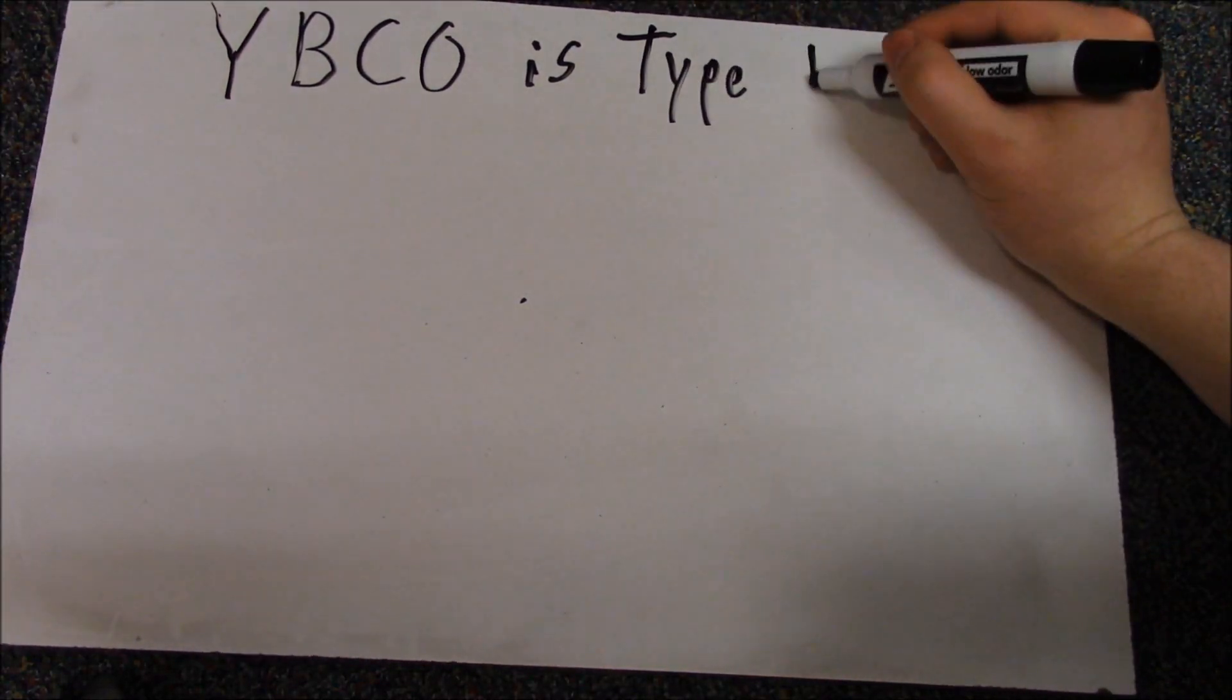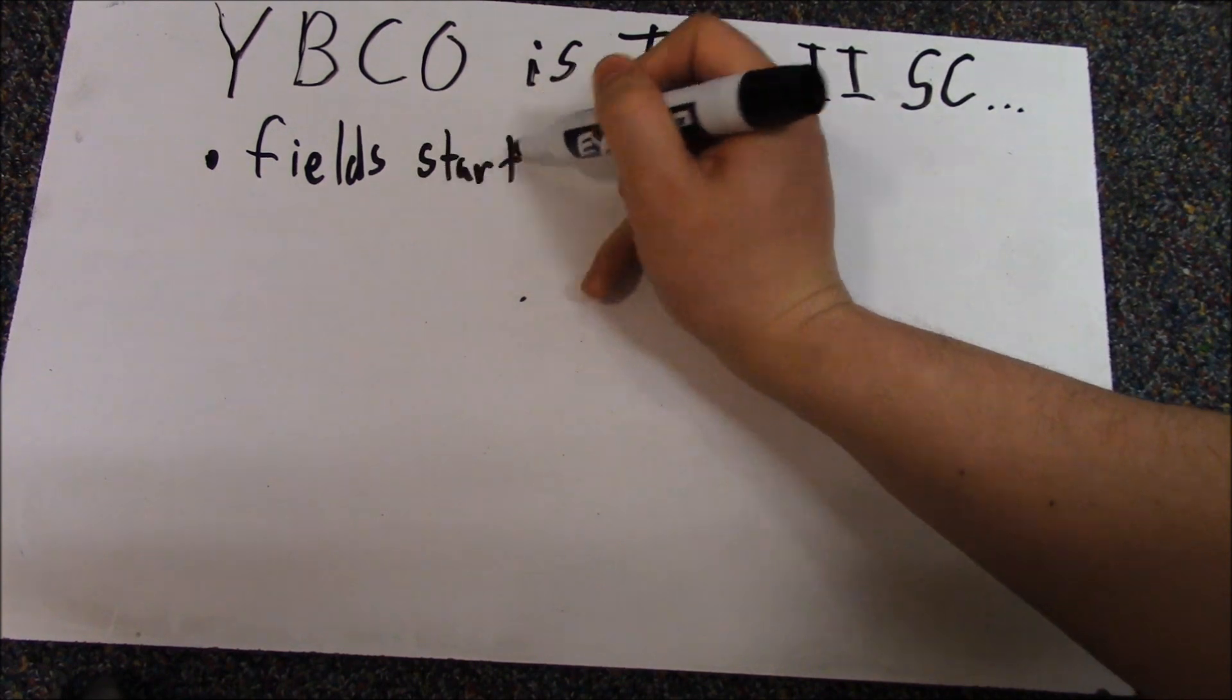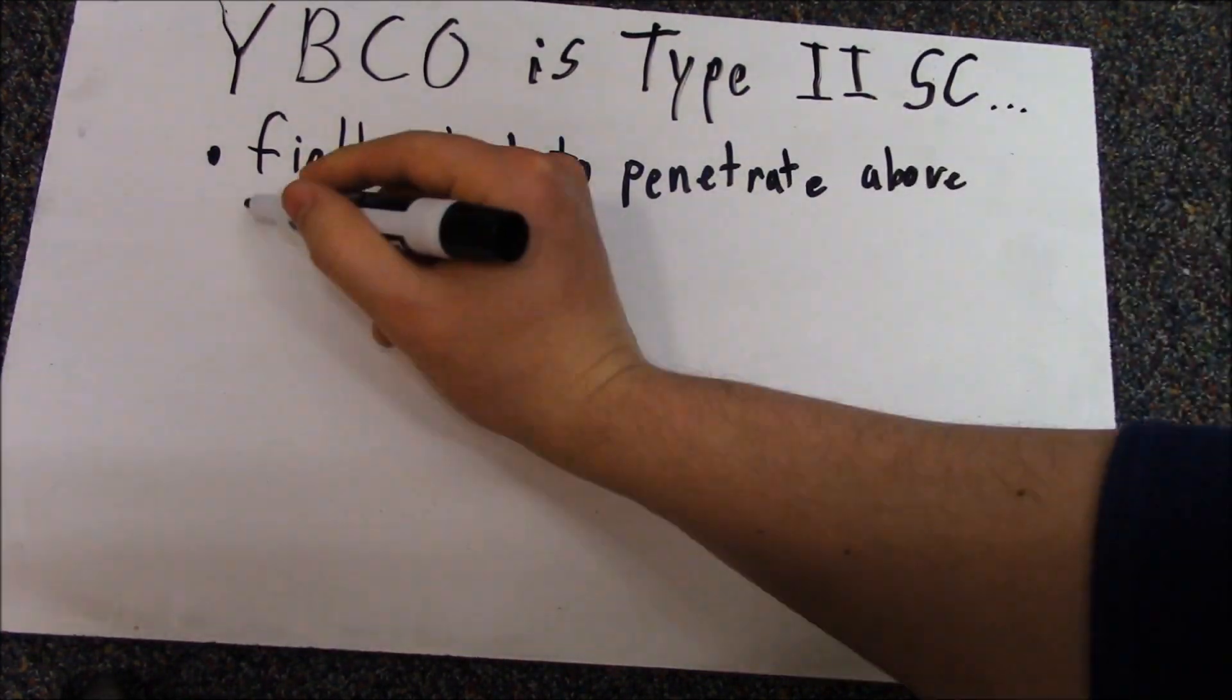Since YBCO is a Type 2 superconductor, the field starts to penetrate above a critical field. I'll draw the field lines.